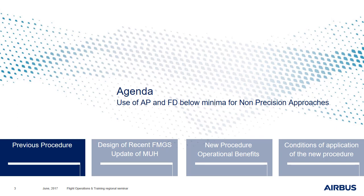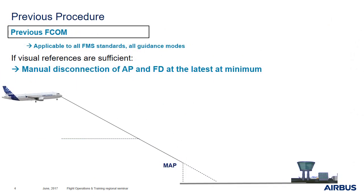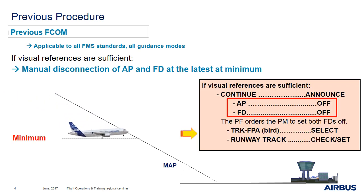So let's start with the previous procedure. The previous procedure, applicable to all FMS standards and all guidance modes, requested to manually disconnect the AP and FD at the latest at minimum if visual references are sufficient to continue the approach. So when reaching minimum: continue, announce, AP off, FD off, track FPA, bird select, runway track, check set.